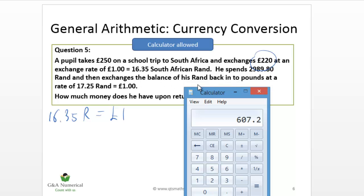Then what does he do? He exchanges that balance back into pounds at a rate of 17.25 to the pound. So notice the exchange rate has changed from when he first changed up his money. At a later date, he's changing it back again. This is a different exchange rate, so don't be fooled into using this again. We have to use this exchange rate.